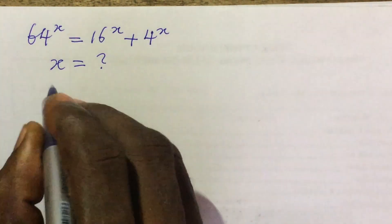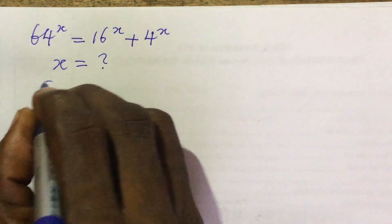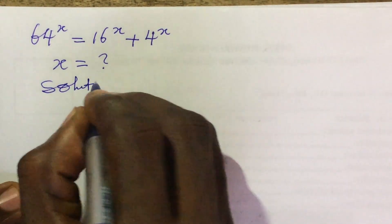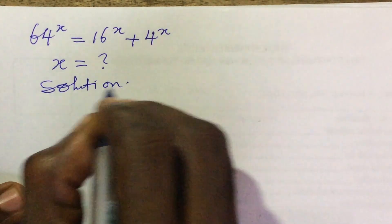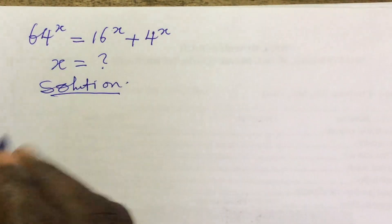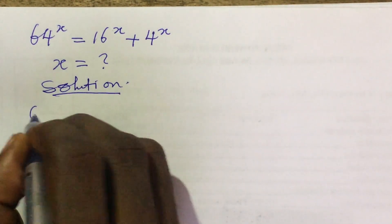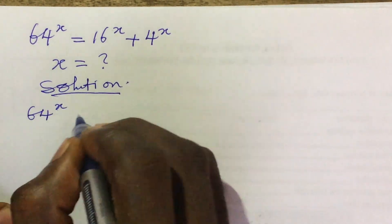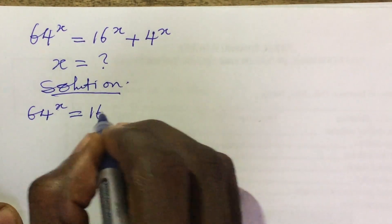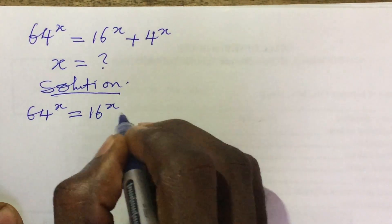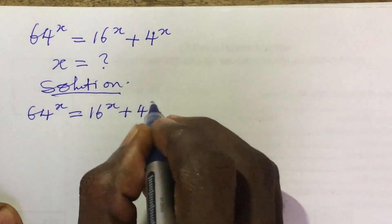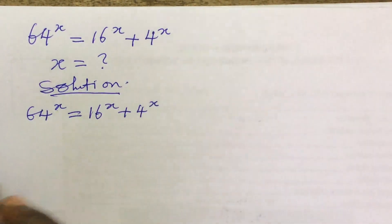Let's dive into this challenge. We put down our equation which is 64 to the power of x equals 16 to the power of x plus 4 to the power of x.